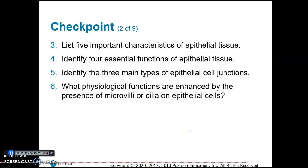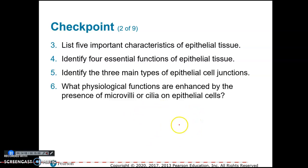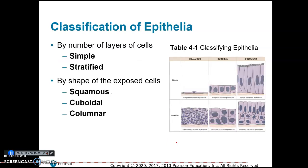Microvilli help absorb more nutrients or substances into the cell, while cilia are for moving substances across the apical surface of the cells.